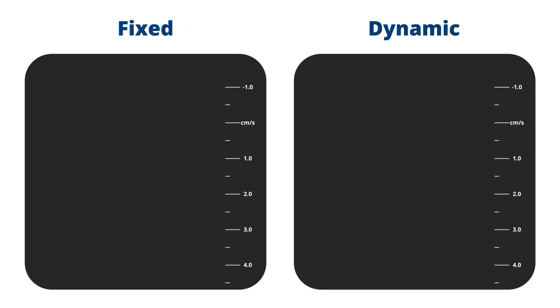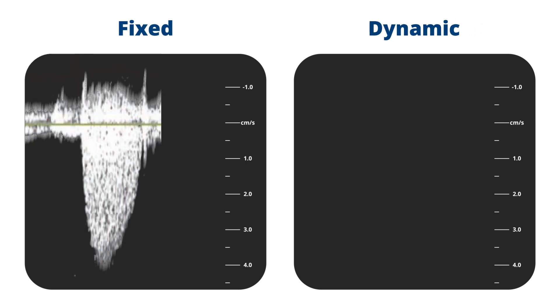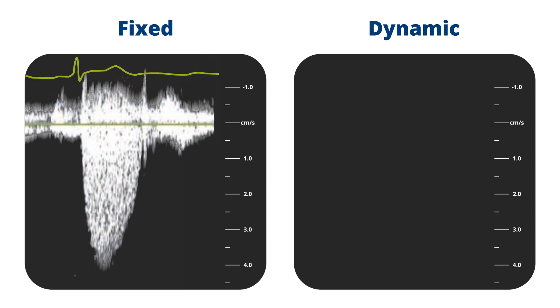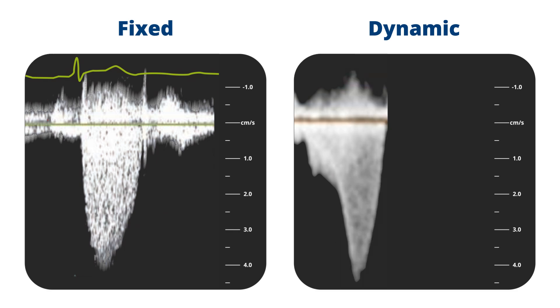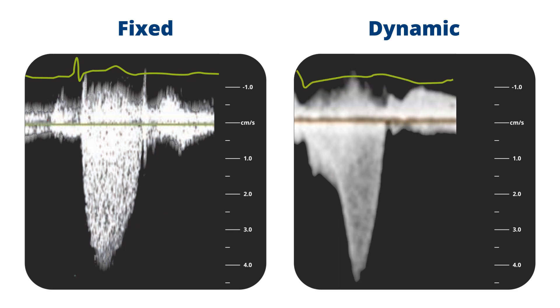These differences are clearly illustrated in the spectral Doppler profiles. With a fixed obstruction, the spectral Doppler profile has a parabolic shape that generally peaks in mid-systole. However, dynamic obstruction usually starts off with lower velocities that peak in late systole, producing the classical open dagger-shaped spectral Doppler profile.